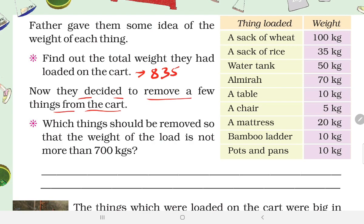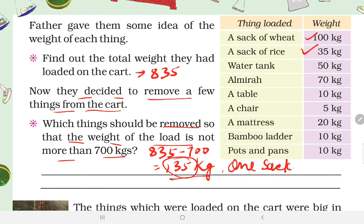Now they decided to remove a few things from the cart. Which thing should be removed so that the weight of the load is not more than 700 kg? It's 835 kg and we have to make it 700 kg. It's more than 135 kg. So we have to remove things which weigh 135 kg. One wheat sack and one rice sack equal 135 kg. Now total is 700 kg.